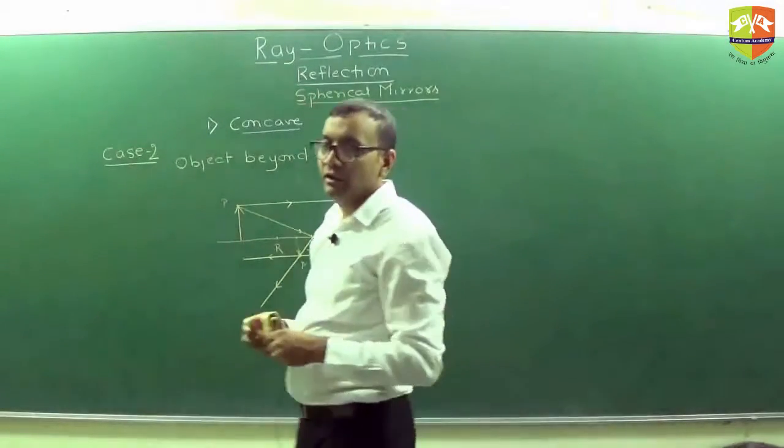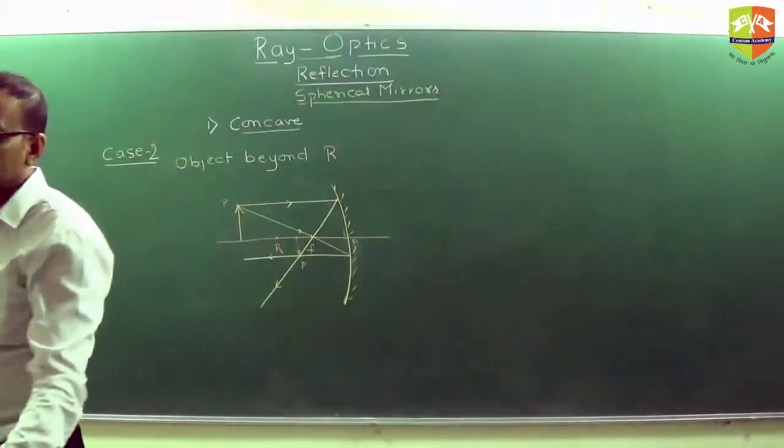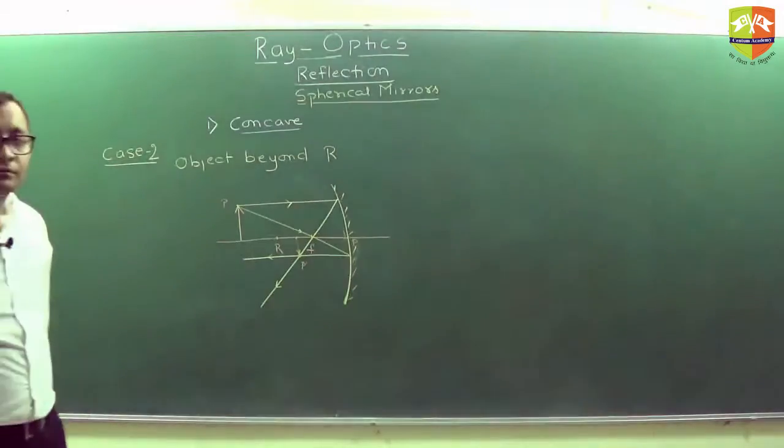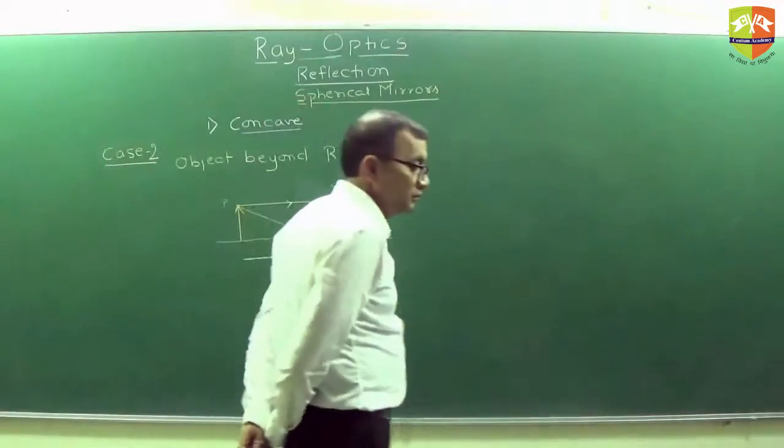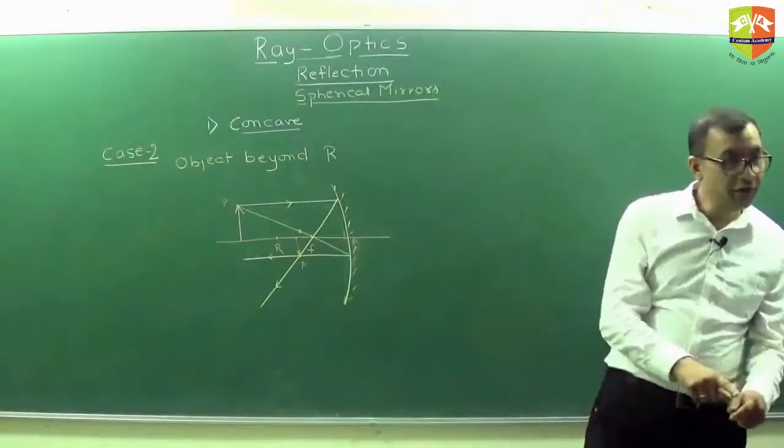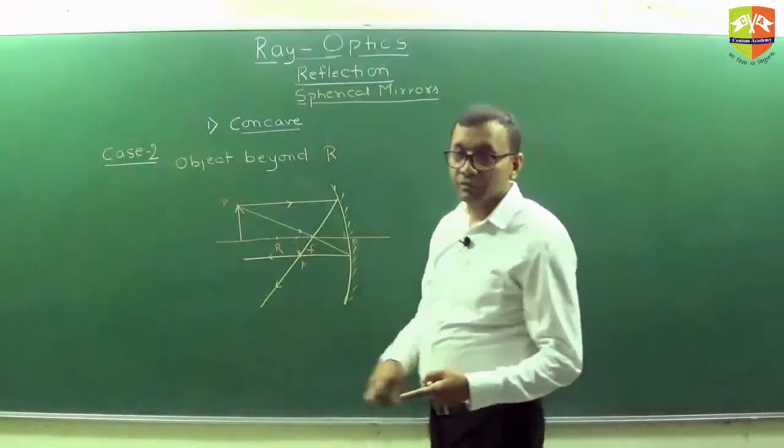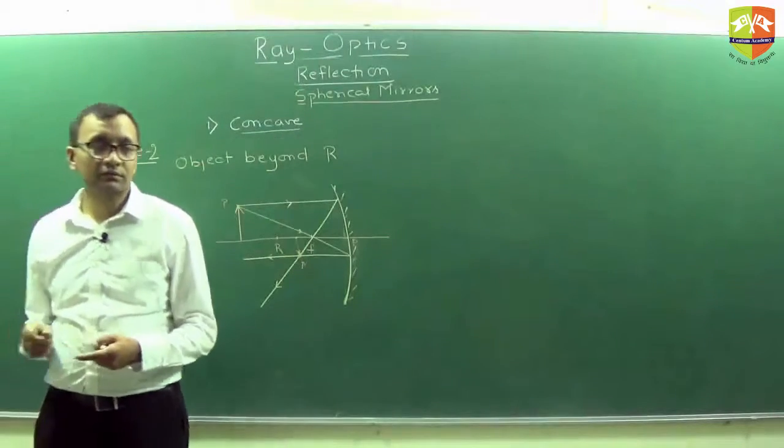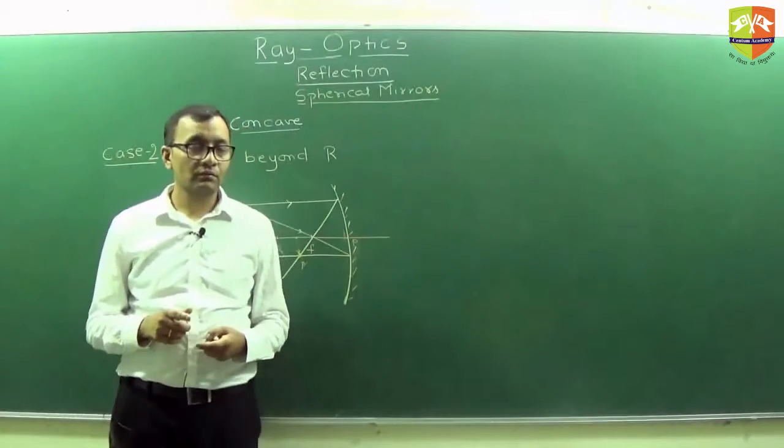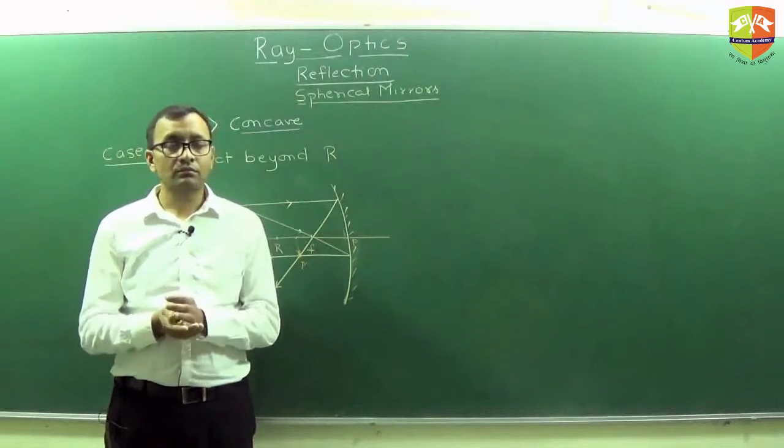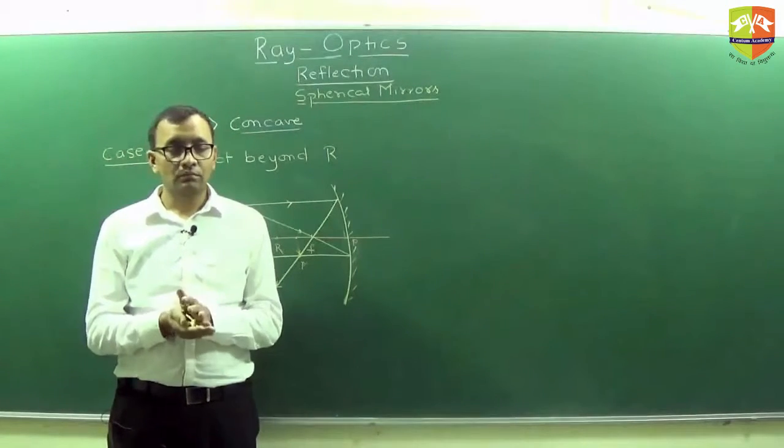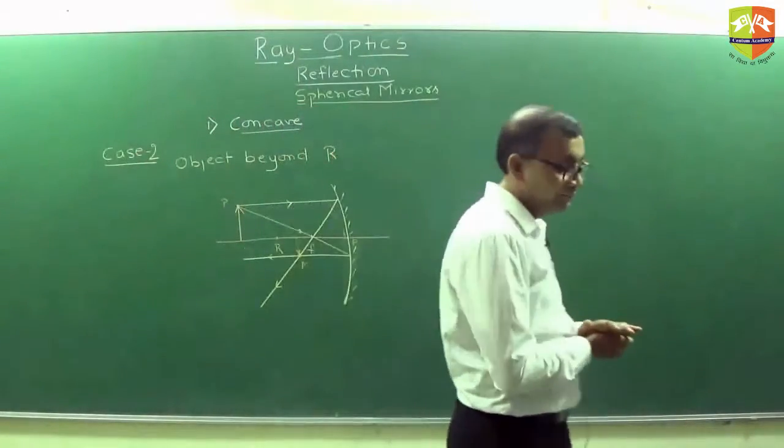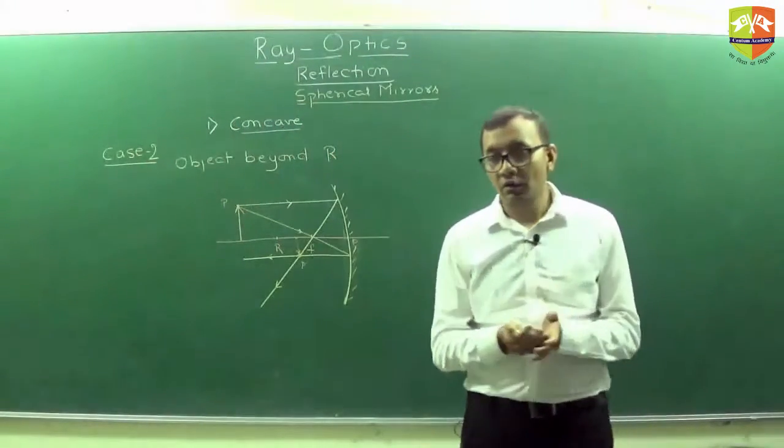Write down characteristic of this image. What do you think the characteristics are? Real, inverted, diminished. Real, inverted, diminished and between R and F.